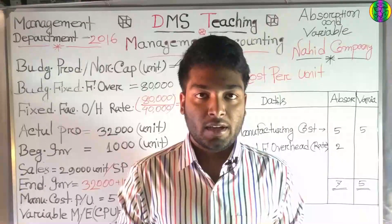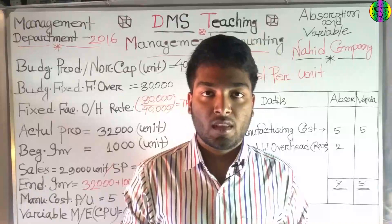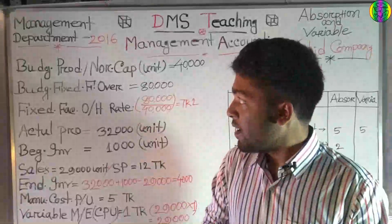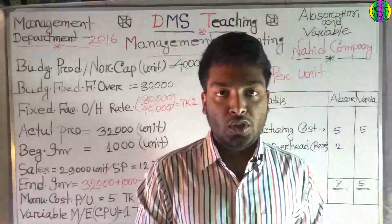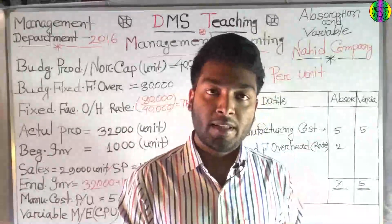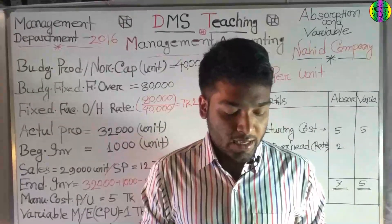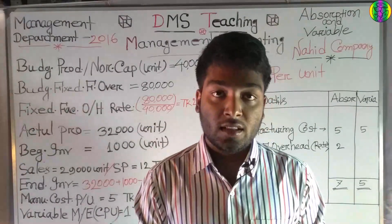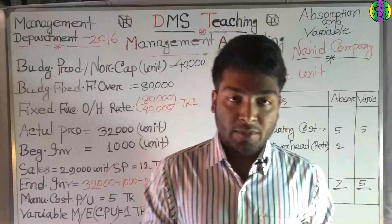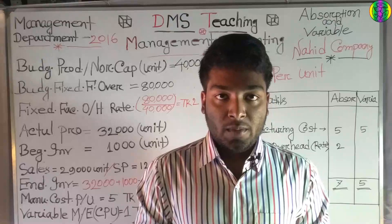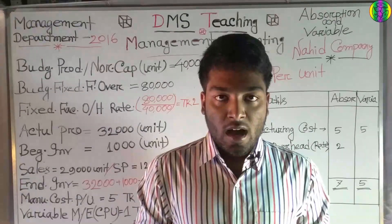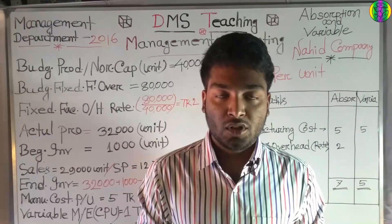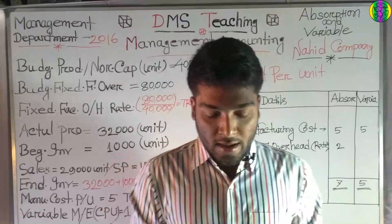Hello friends, welcome back to this new episode. Today we are looking at a question about the direct method solution in management accounting. A company is comparing its present absorption costing practice with the direct costing method. We will learn about absorption costing and direct costing. Variable costing is also referred to as direct costing, while absorption costing is also known as full costing.